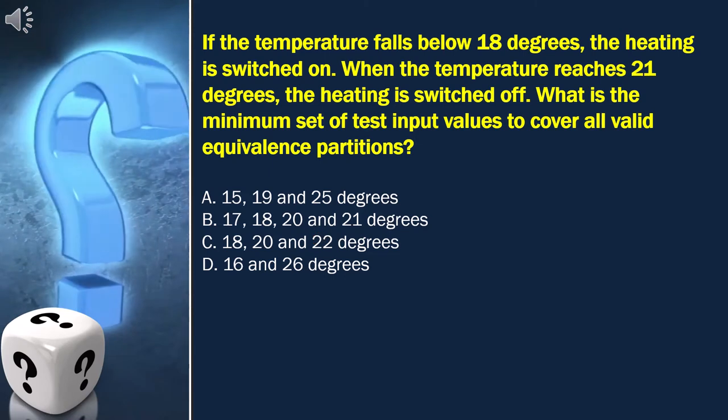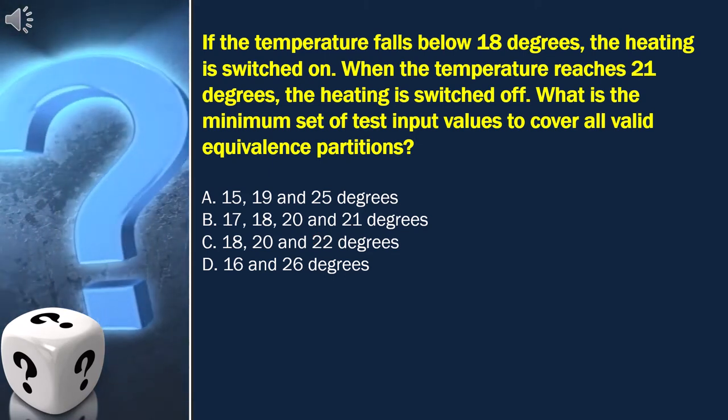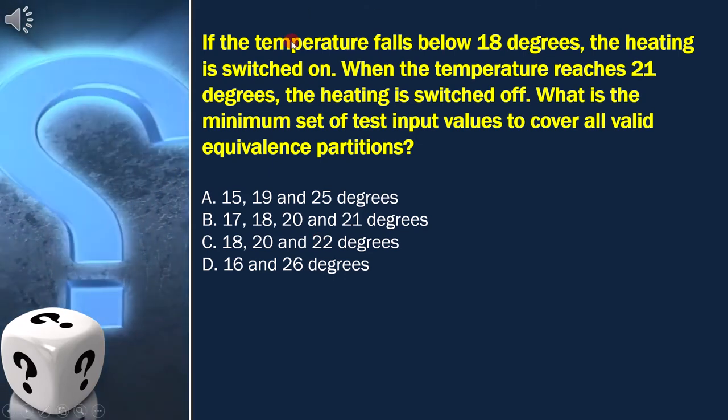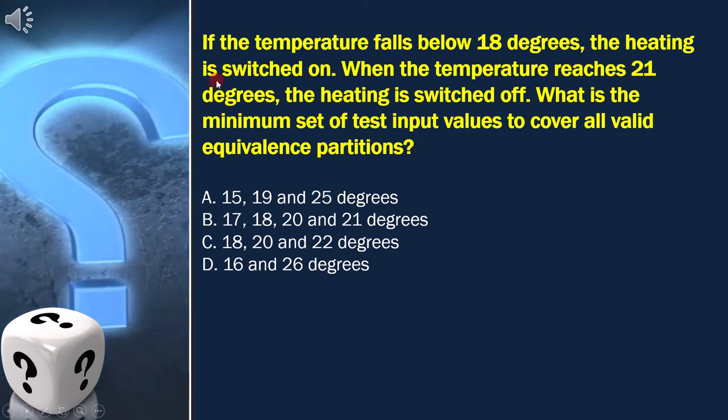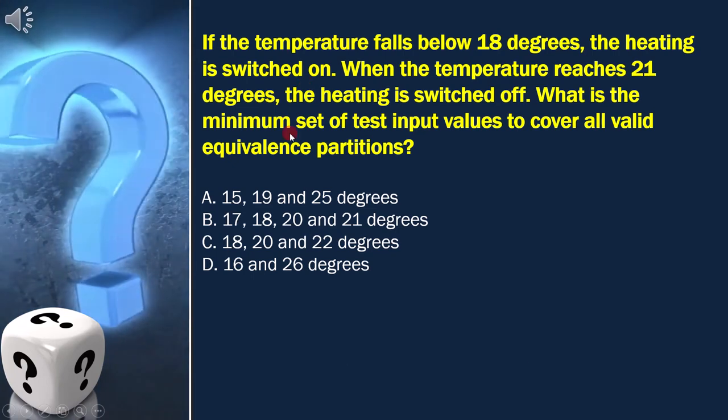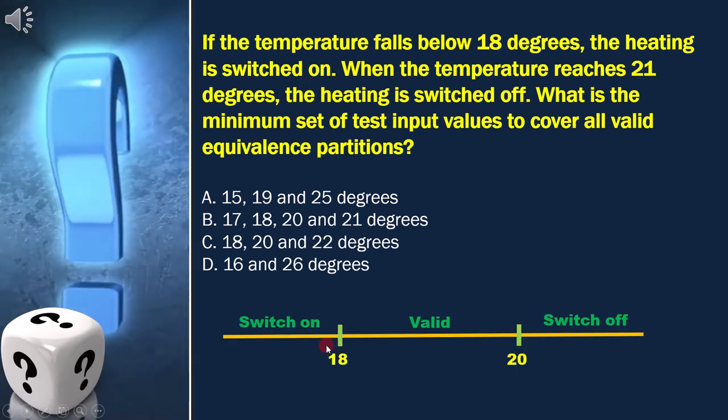Let's draw the equivalence classes diagram to get the answer. As per the question, if the temperature falls below 18 degrees, the heating is switched on. That means 18 is the lower boundary.